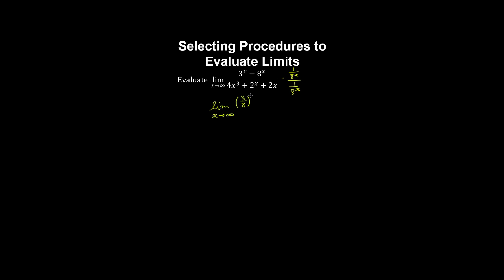Let's evaluate this one-sided limit of a function with exponential terms and polynomial terms as x goes to infinity. We multiply by the reciprocal of the fastest growing term. Since x is in the exponent, 8 to the x is the fastest growing term. Multiplying every term by the reciprocal, we obtain the following limit. Applying our quotient theorem and sum and difference theorems to evaluate the limit of each term separately, as x goes to infinity all these terms disappear. We obtain minus 1 on 0, which tells us that the function is unbounded.